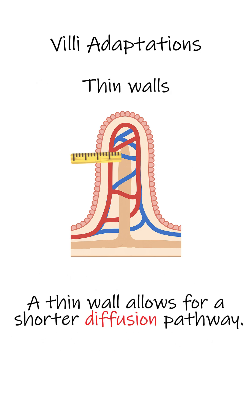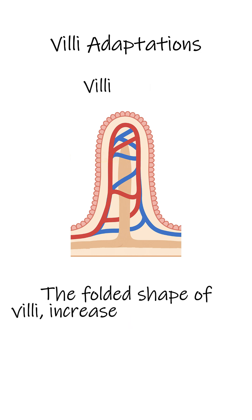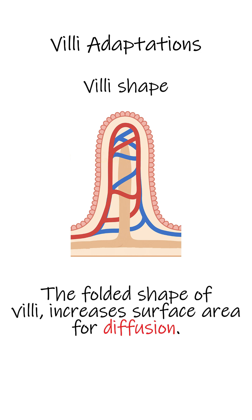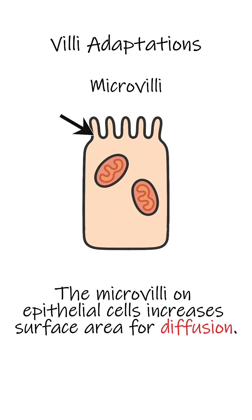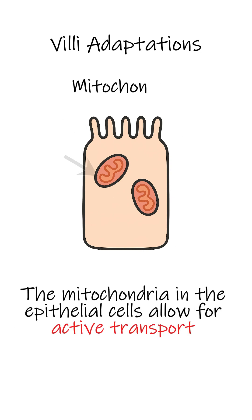Villi have a thin wall, which means there's a shorter diffusion pathway. The villi are also folds of the inner wall of the intestines, which increases the surface area for the absorption of food molecules by diffusion. The epithelial cells also have microvilli to increase surface area, and mitochondria to enable active transport of food molecules.